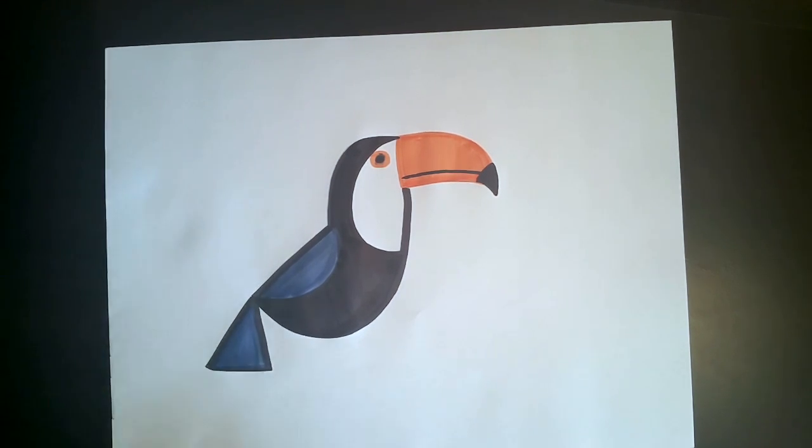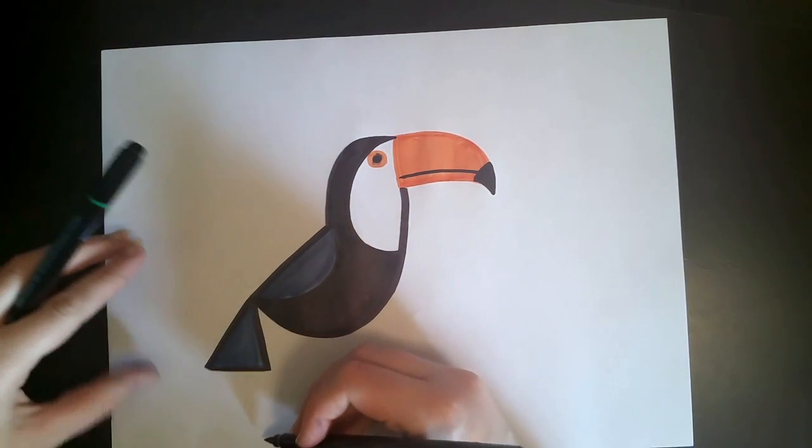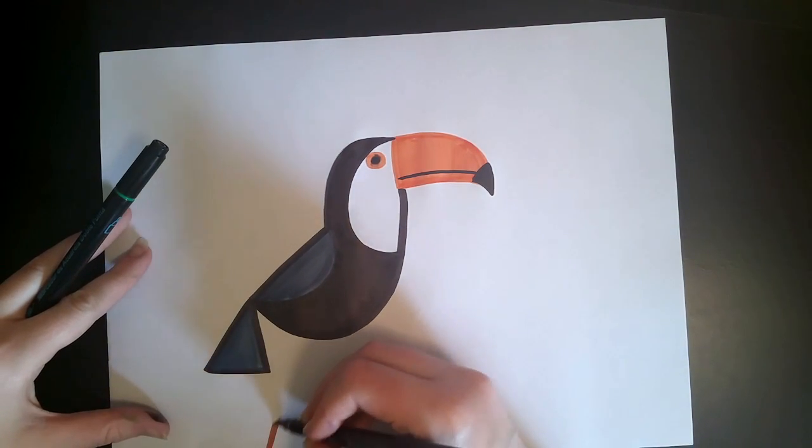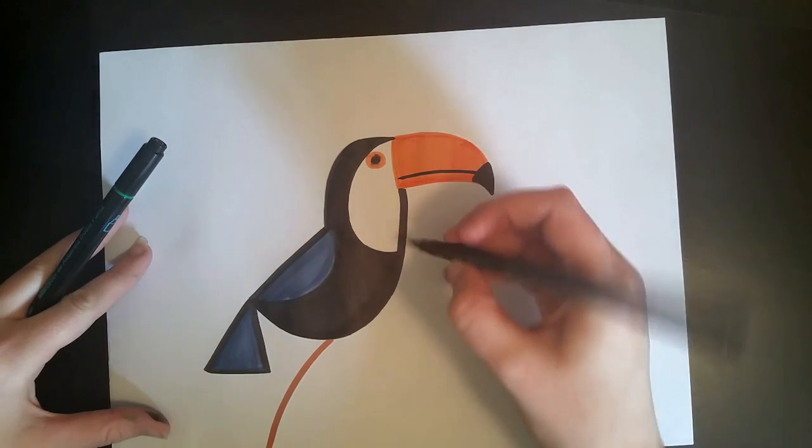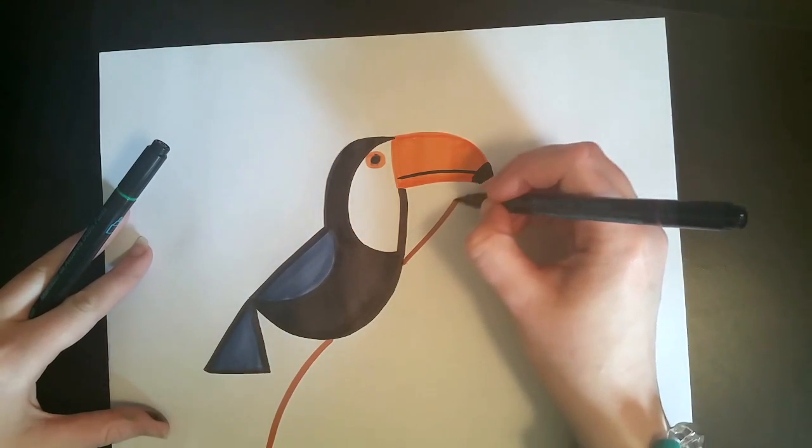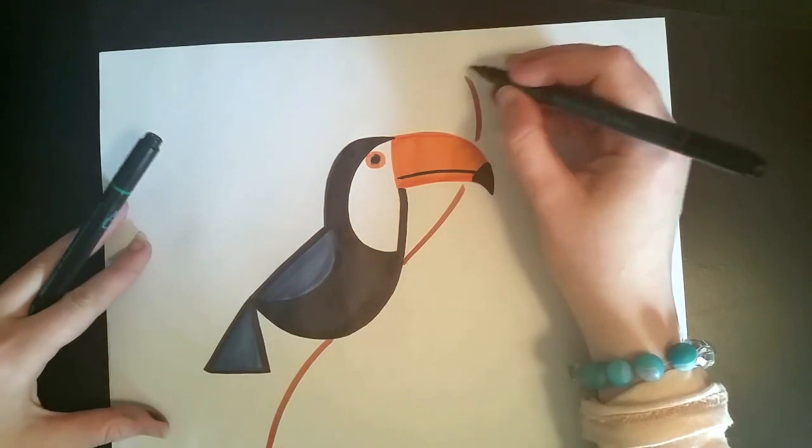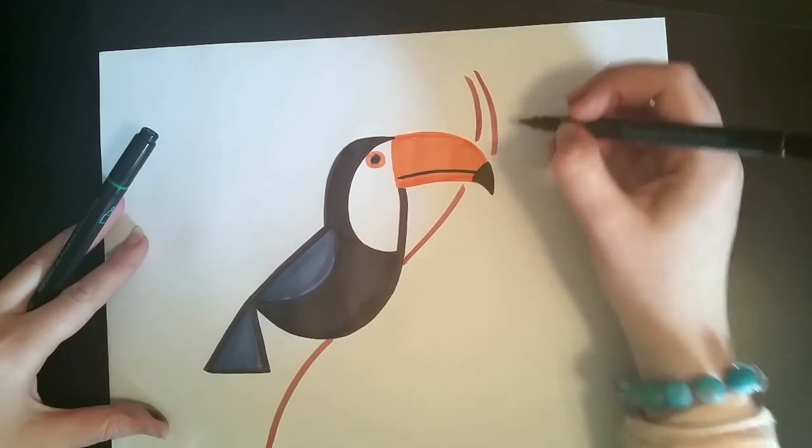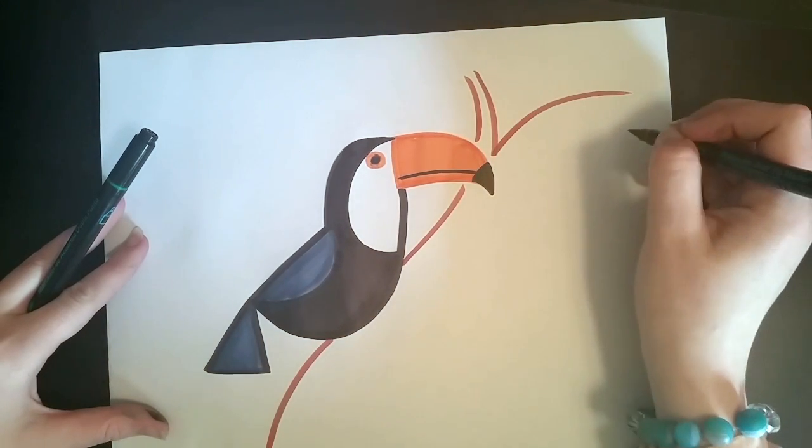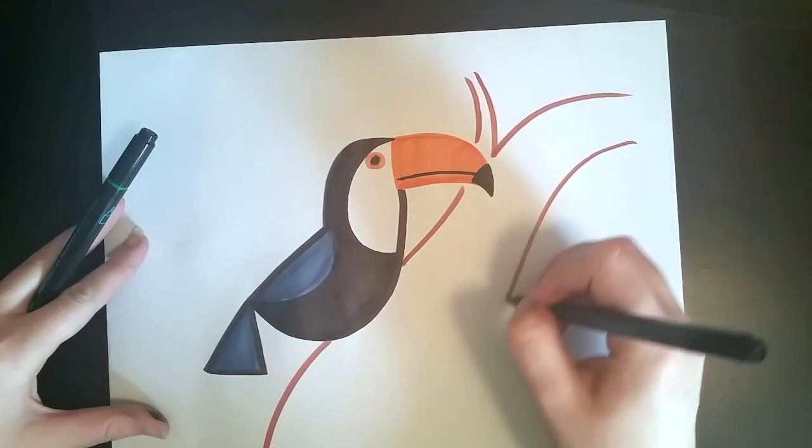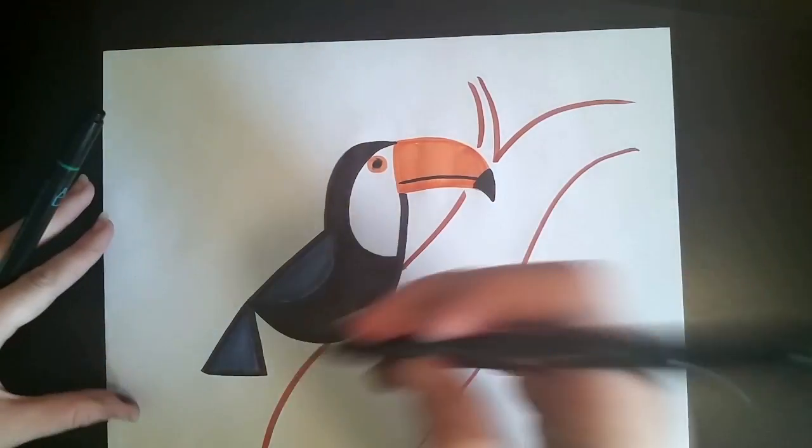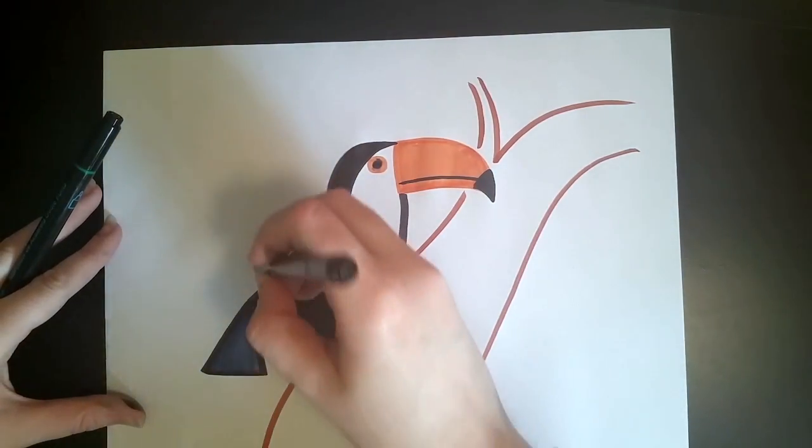So that's pretty much our toucan, but now we're going to fill in some branches and stuff. Go ahead and grab your brown marker and do a long, curvy shape up to the toucan, and then continuing. And some curvy branches. You don't have to match me exactly, just kind of get the general gist of it. Big, curvy shapes.